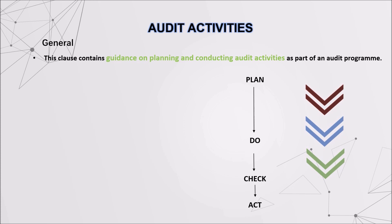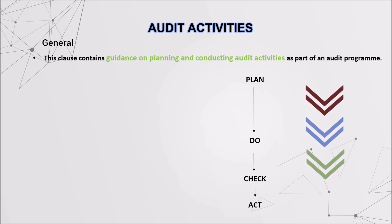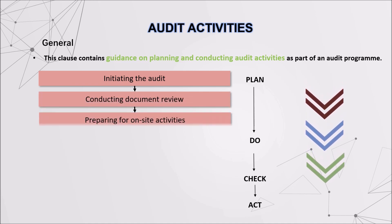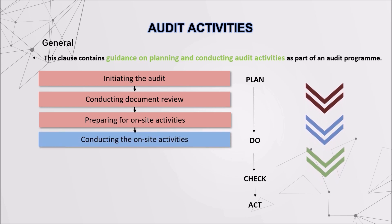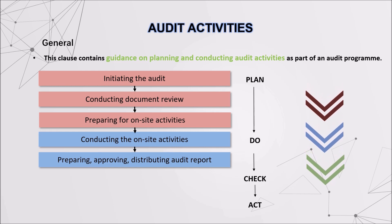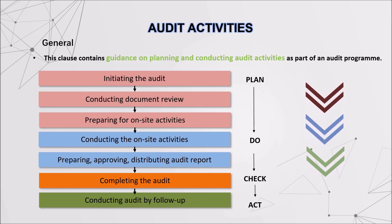The second part of this video is about audit activities. In general, this course contains guidance on planning and conducting audit activities as part of an audit program. We start these activities with a plan. Firstly, we initiate the audit, conduct document review, and then prepare for on-site activities. Heading to the action stages, we conduct the on-site activities and prepare, approve, and distribute our audit report. After that, we complete the audit activities by checking the progress of our audit programs.